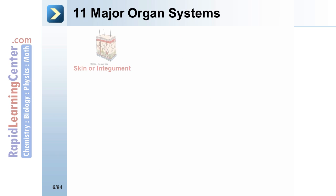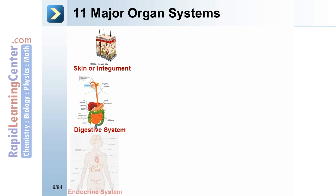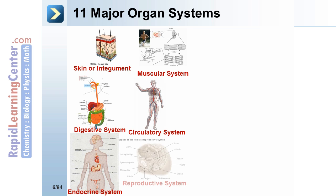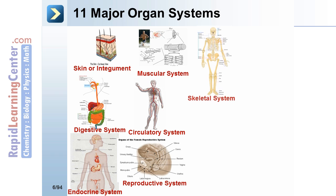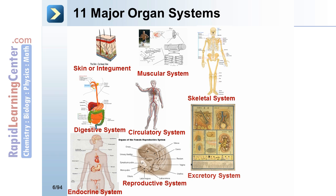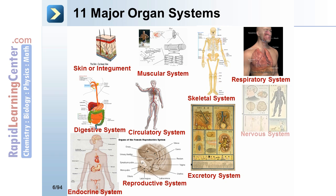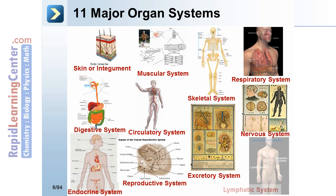There are 11 major organ systems: the skin or integumentary system, digestive system, endocrine system, muscular system, circulatory system, reproductive system, skeletal system, excretory system, respiratory system, nervous system, and lymphatic system.